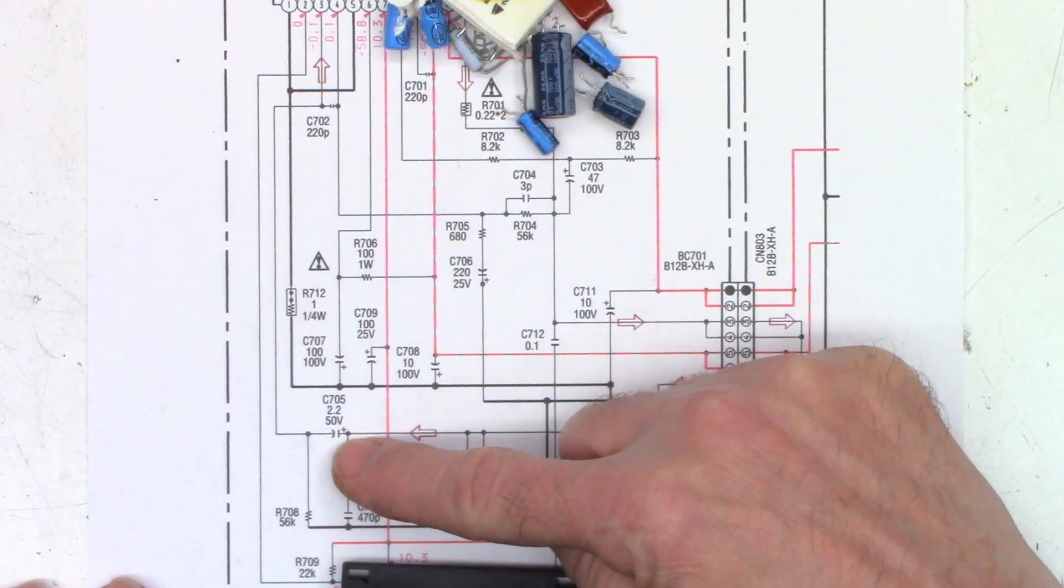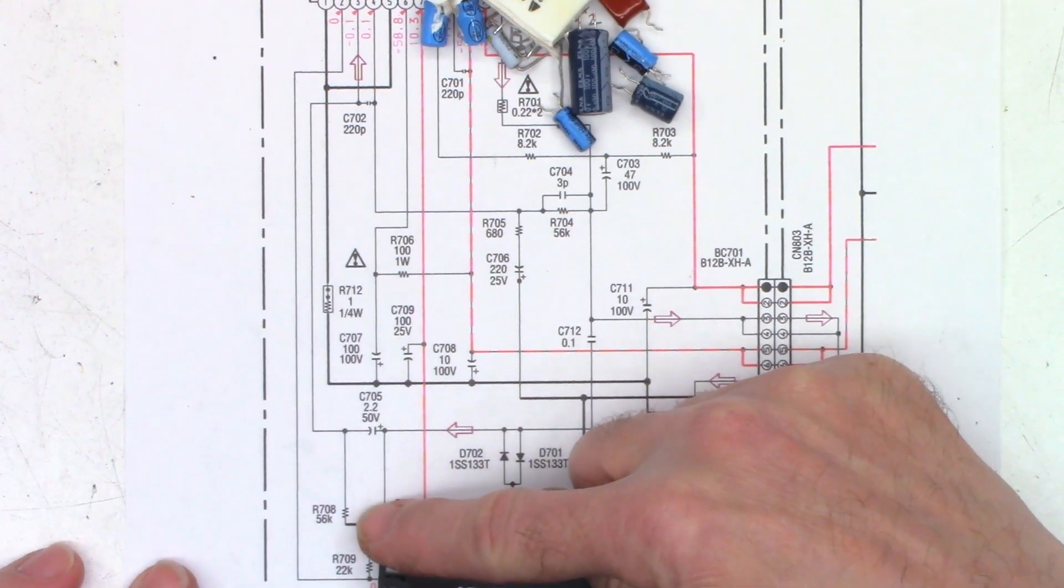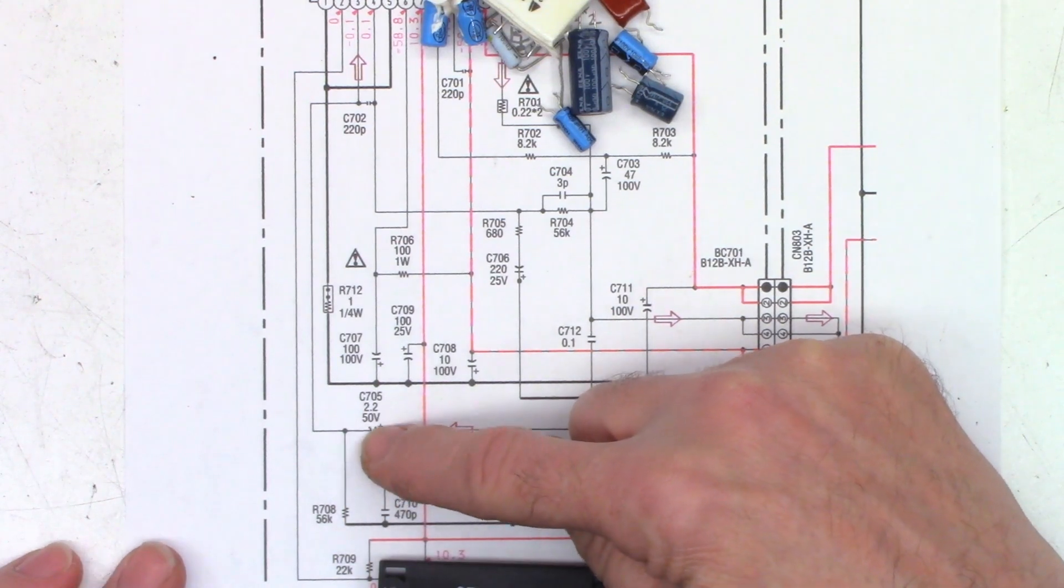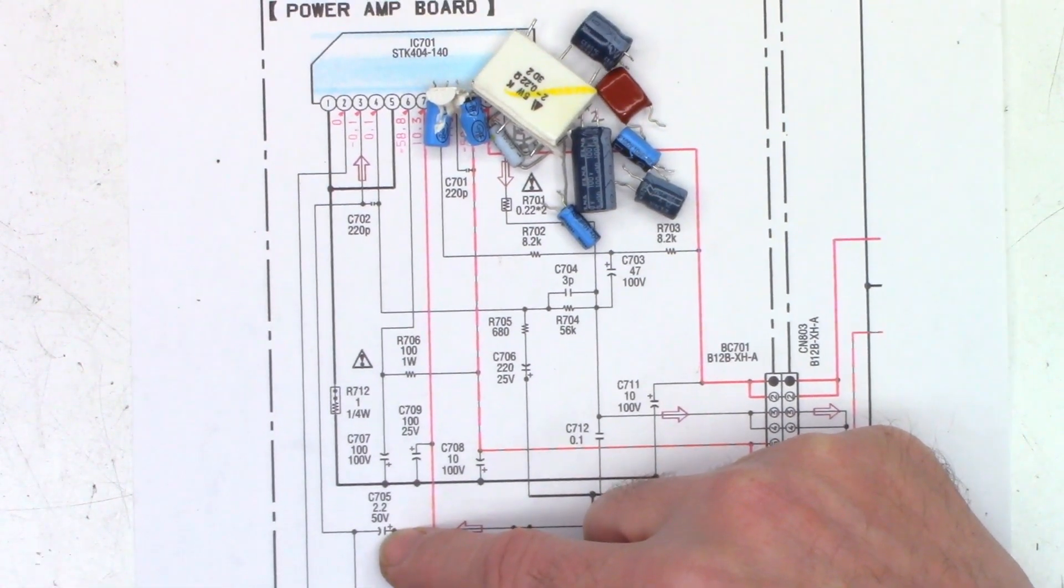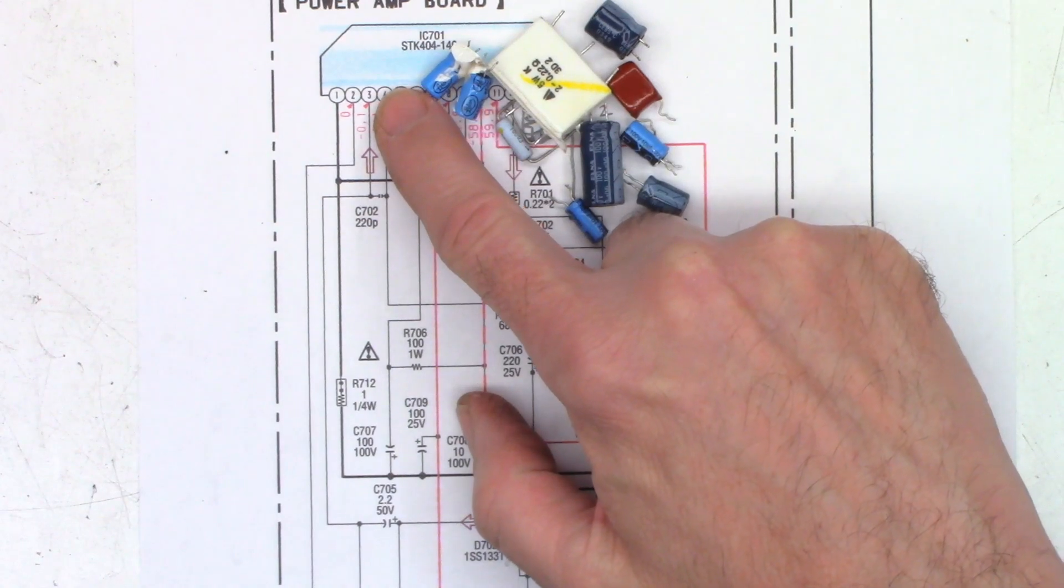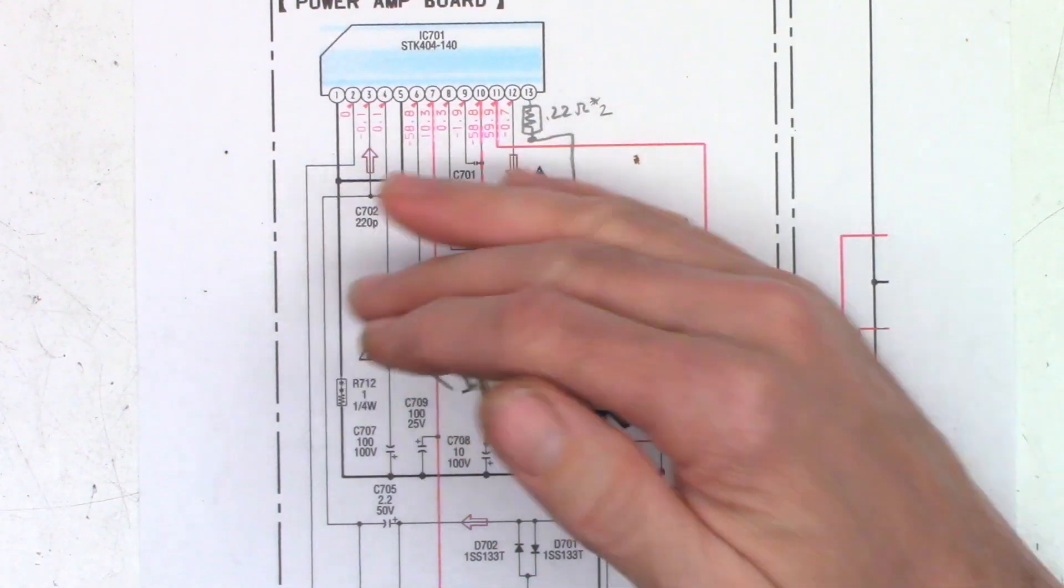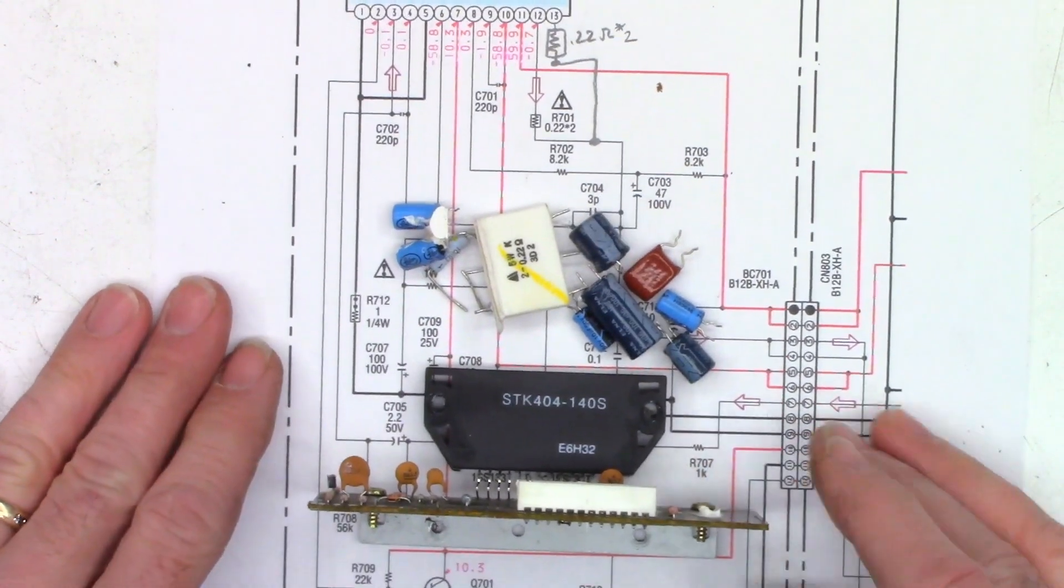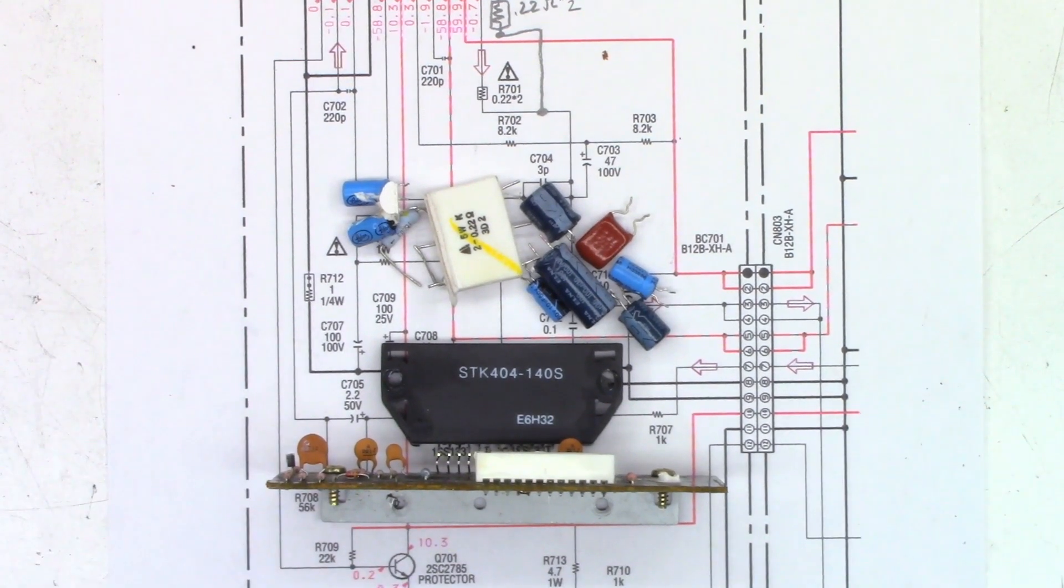It's coupled through a 2.2 microfarad capacitor with a 56k pull down resistor so the voltage doesn't climb after that capacitor, and then it's fed into pin 3 of the power amplifier IC. So everything in my book checks absolutely perfect. There is nothing wrong with this board. Every single component tests absolutely great.